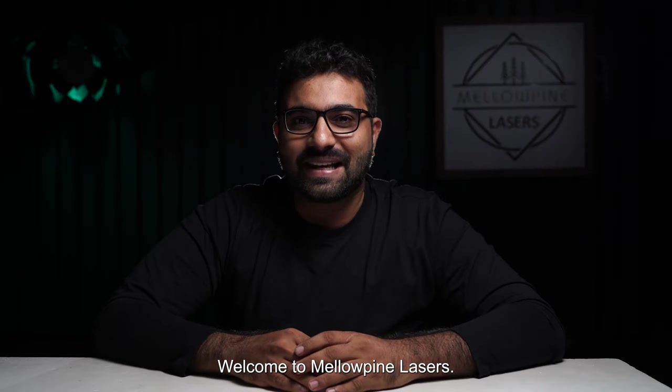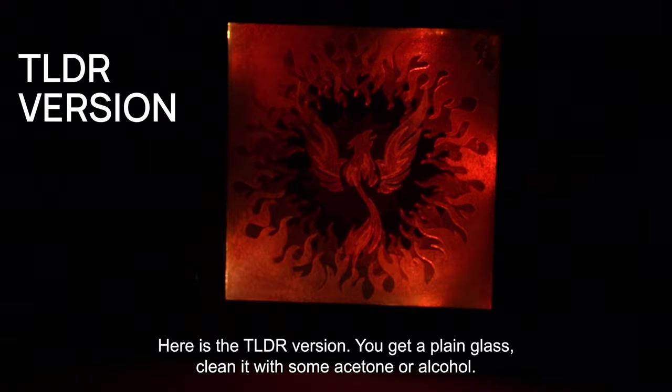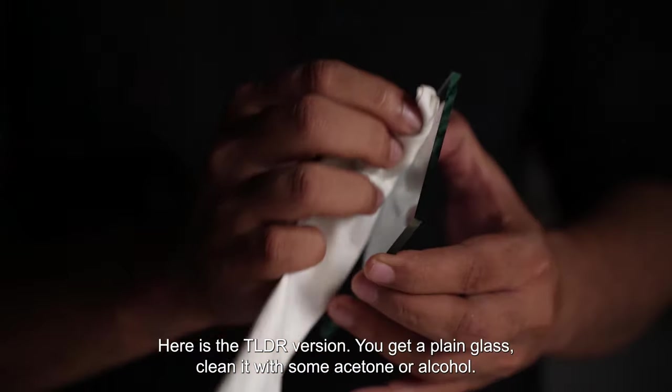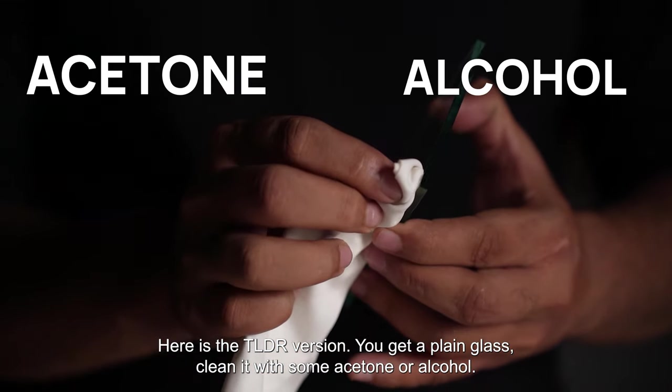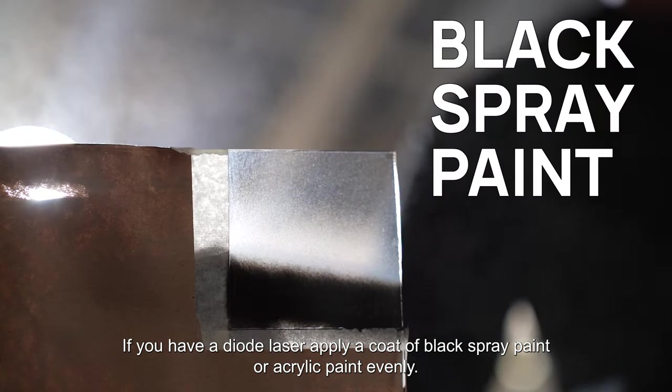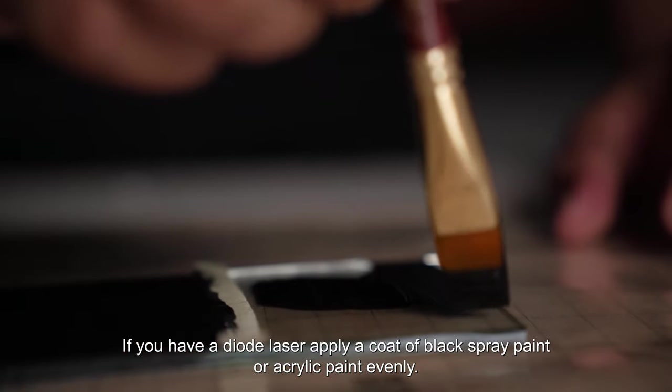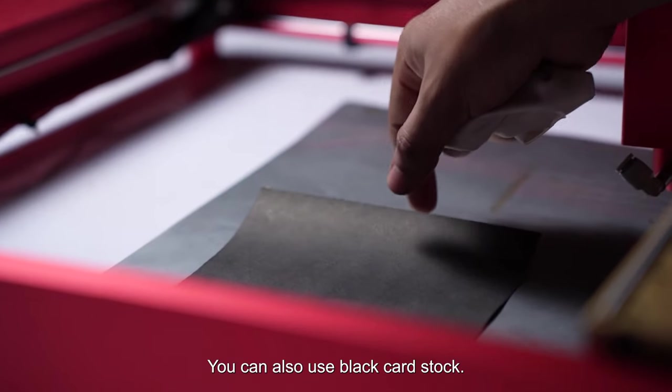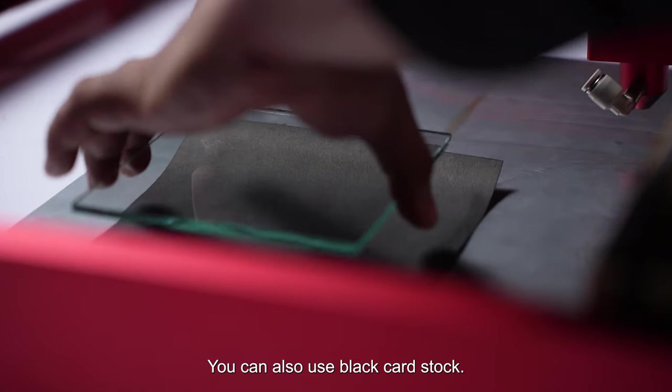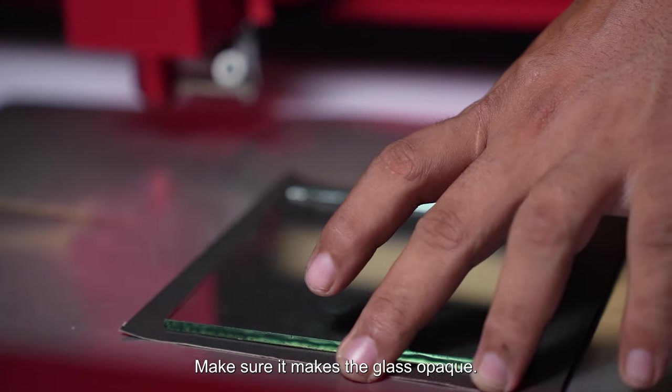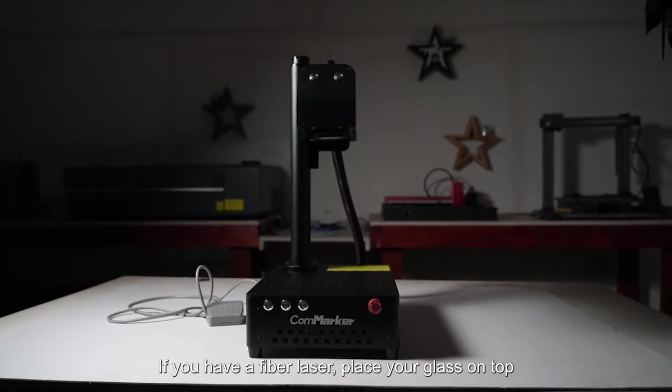Welcome to Mellow Pine Lasers. Let's get started. Here is the TLDR version: you get a plain glass, clean it with some acetone or alcohol. If you have a diode laser, apply a coat of black spray paint or acrylic paint evenly. You can also use black cardstock. Make sure it makes the glass opaque.